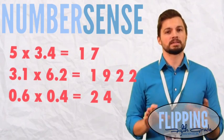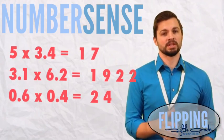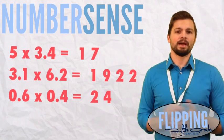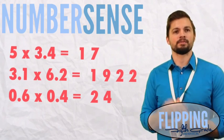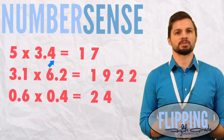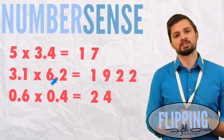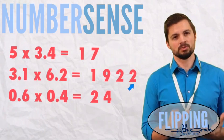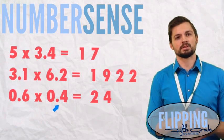Here to give you a quick tip on number sense and multiplication with decimals. Here I have three problems. I have 5 times 3 and 4 tenths equals 17. 3 and 1 tenths times 6 and 2 tenths equals 1,922. 6 tenths times 4 tenths equals 24.